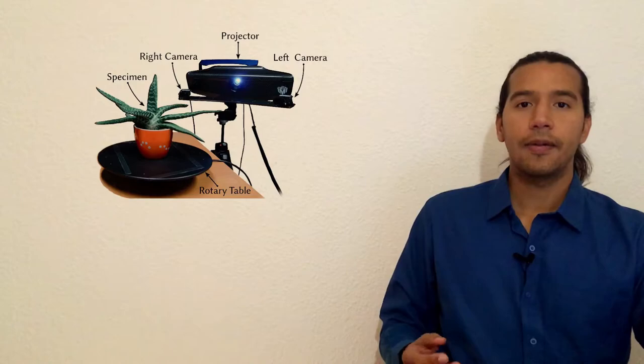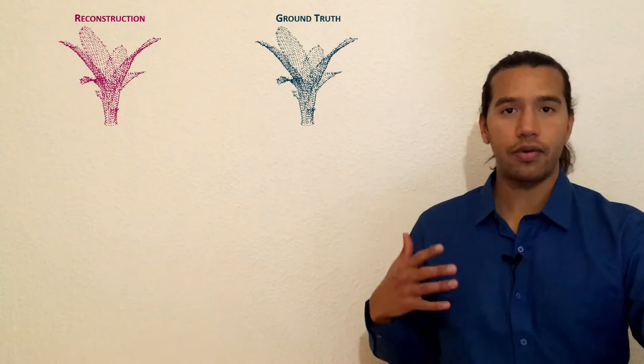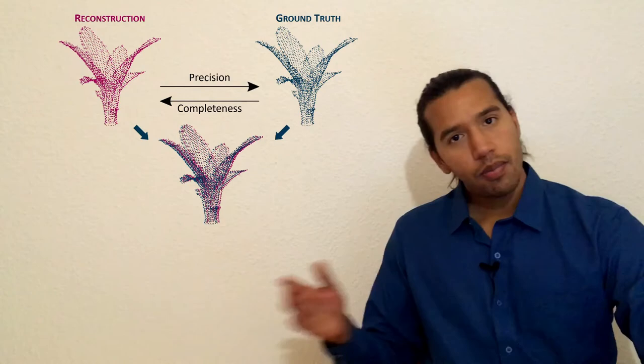I acquired my ground truth data using a state-of-the-art structured light scanner. So in summary what we have is on one side the 3D reconstruction from the video, and on the other side the ground truth reference data from the scanner, and we compared the two in terms of measurement for precision and completeness.